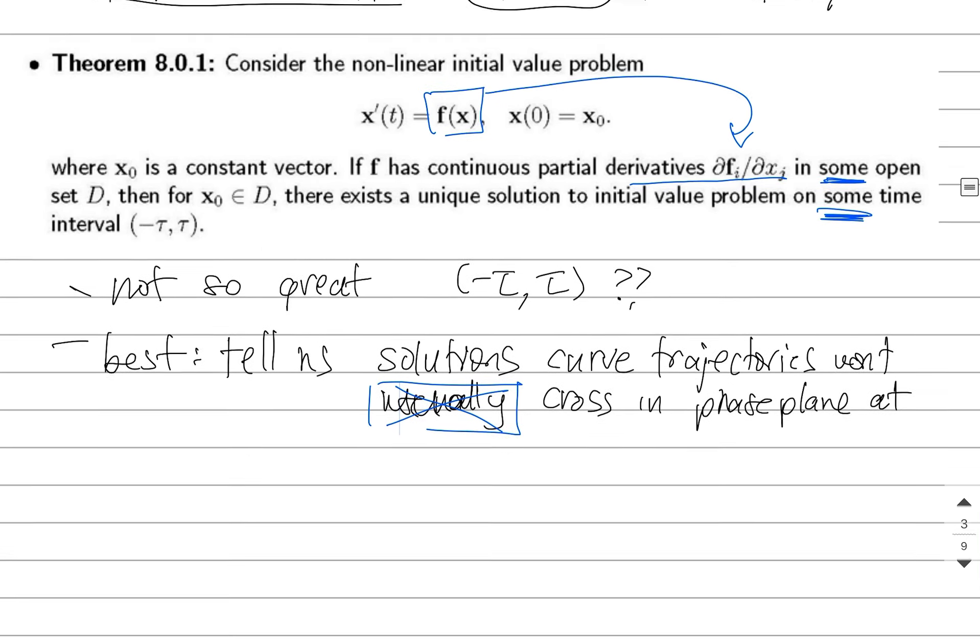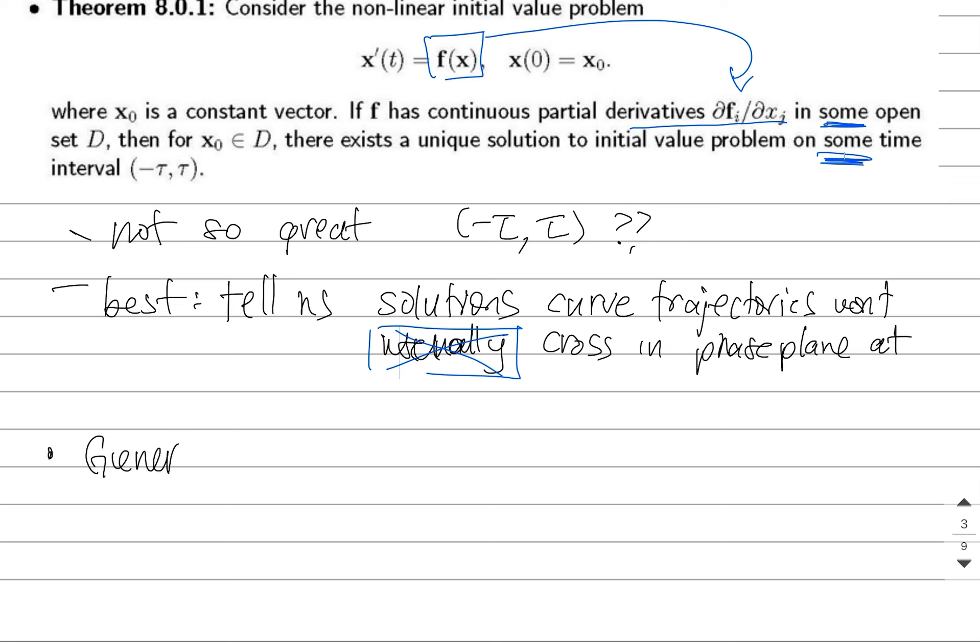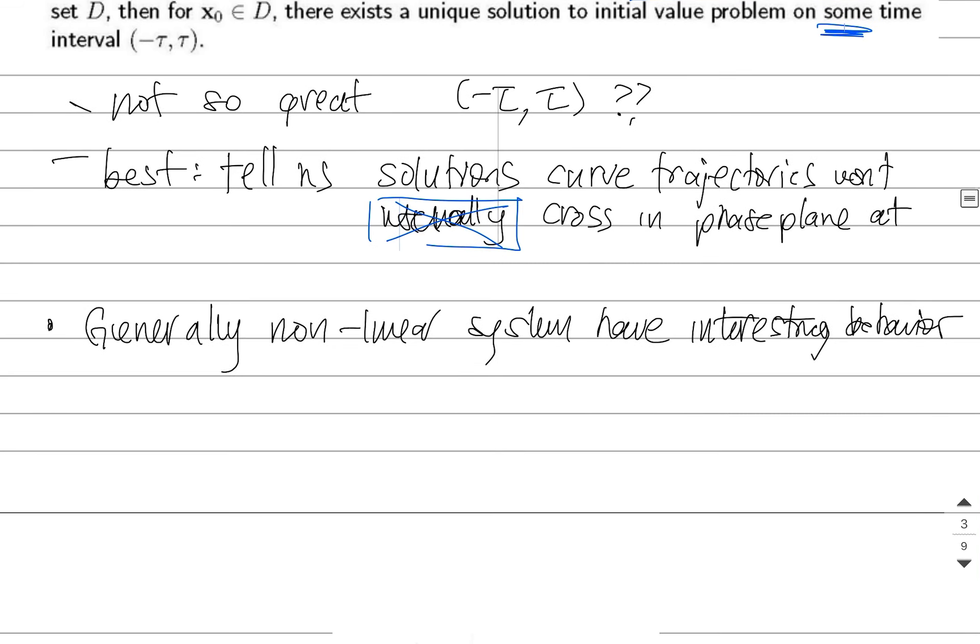We aren't going to read too much into this. Now generally, non-linear systems have interesting behavior. And what do I mean by that? Well, non-linear systems contrast very differently. When we have a linear system, a linear system is always able to be written in this nice form, x prime equals Ax. There's only one equilibrium solution. And the one equilibrium solution is x equals zero. This is the one constant solution that when you plug into the right-hand side and the left-hand side, you'll always get a constant solution.